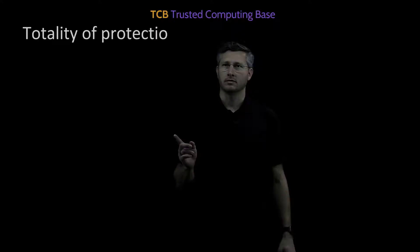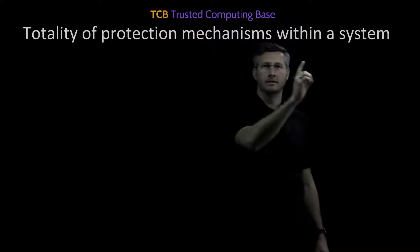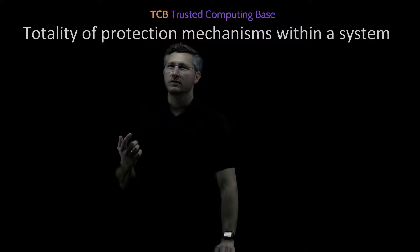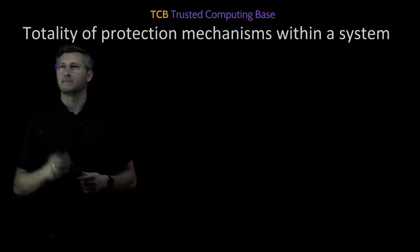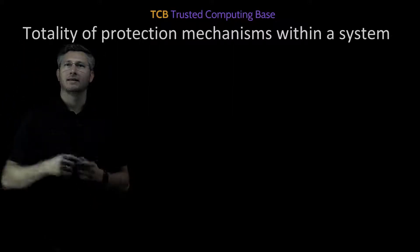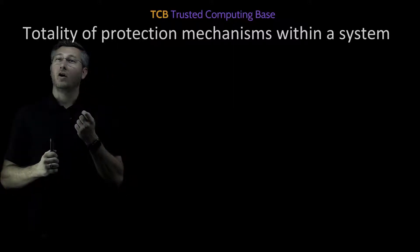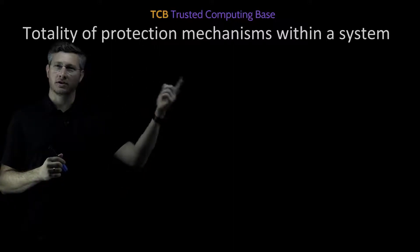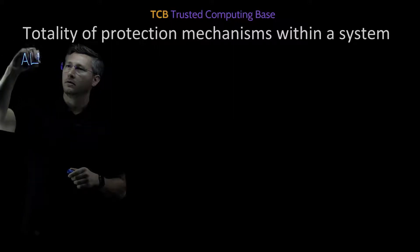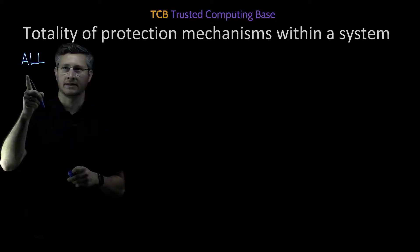Here's a pretty good definition: the totality of protection mechanisms within a system. Let's decompose this sentence and understand what each of these pieces mean. Totality simply means the collection, the assembly, everything — all of the components, all of the protection mechanisms within a system. Totality simply means all, everything within a system that's responsible for the security of that system.